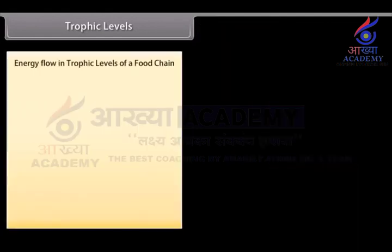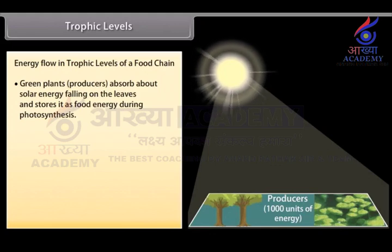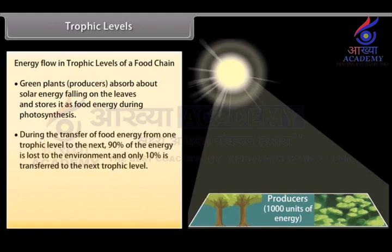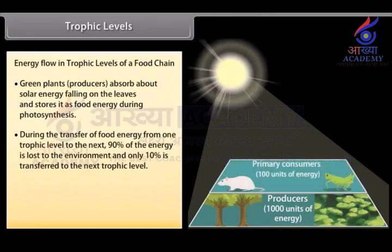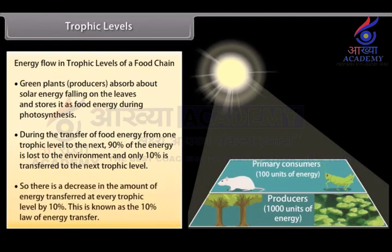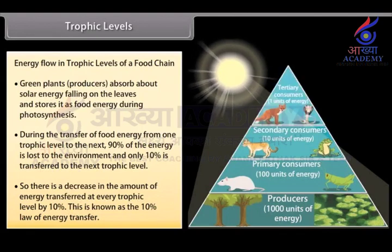Energy flow in trophic levels: Green plants (producers) absorb about 1% of solar energy falling on the leaves and store it. During the transfer of food energy from one trophic level to the next, 90% of the energy is lost to the environment and only 10% is transferred to the next trophic level. There is a decrease in the amount of food energy transferred at every trophic level by 10%. This is known as the 10% law of energy transfer.